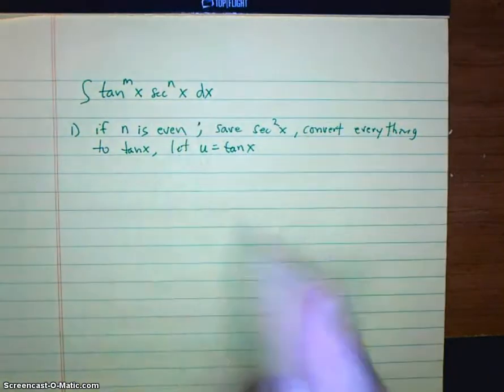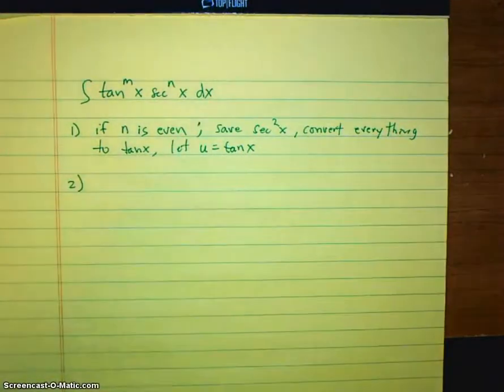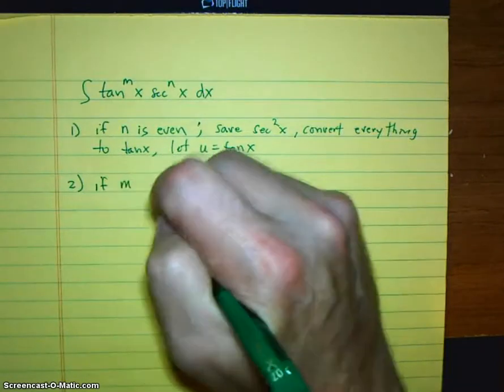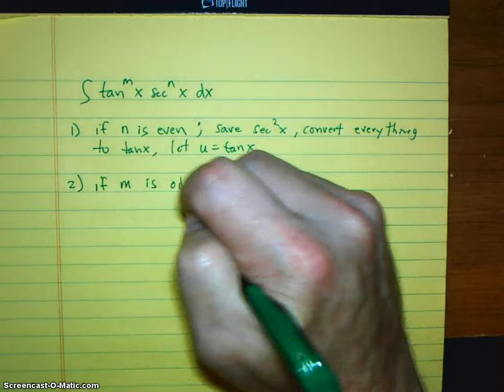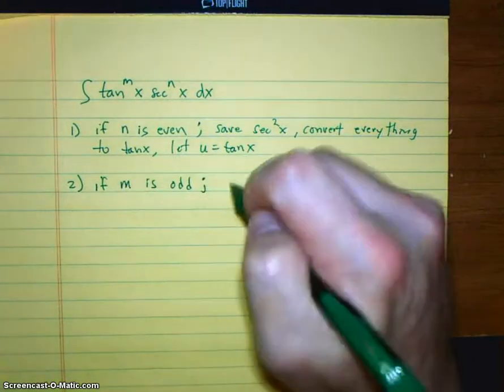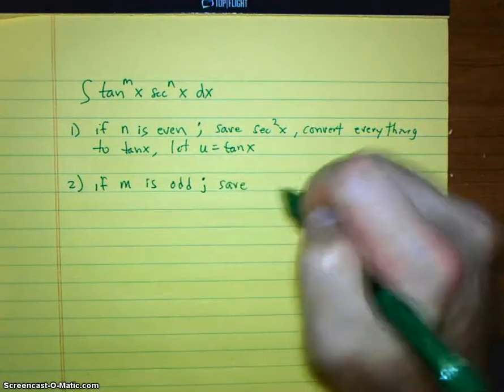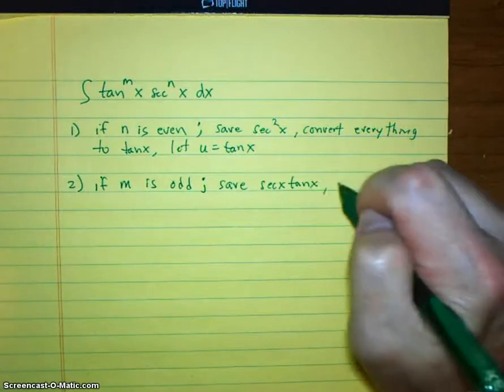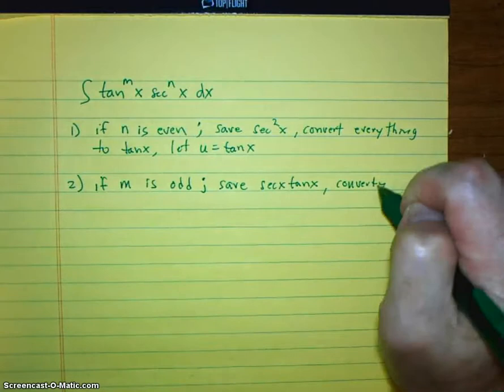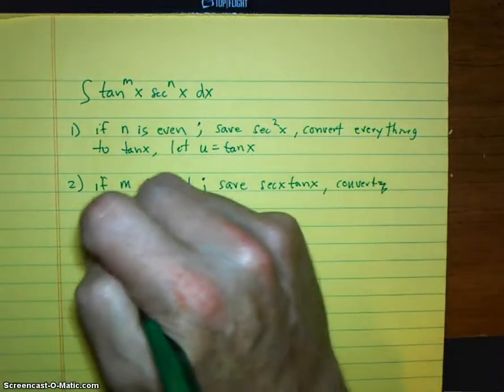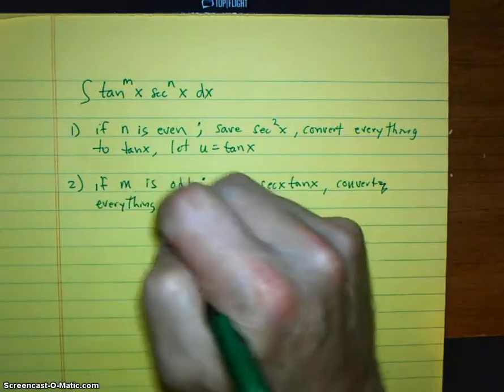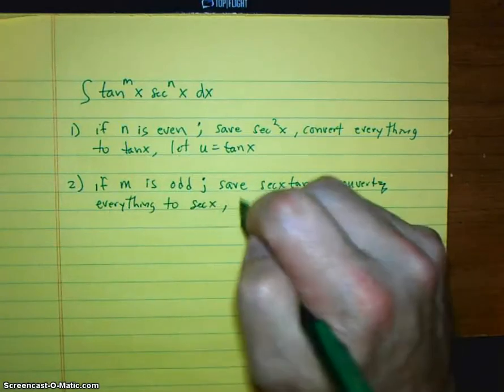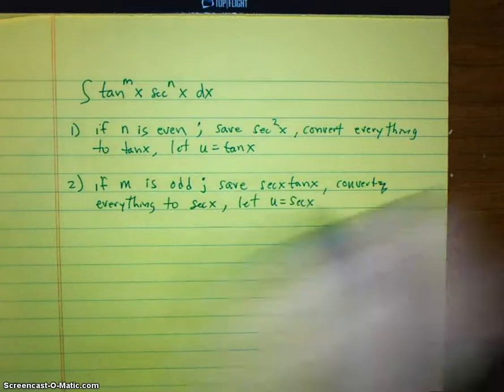All right, so that's rule number one. Rule number two. So if m is odd. Save secant x tan x. Convert everything. To secant x.